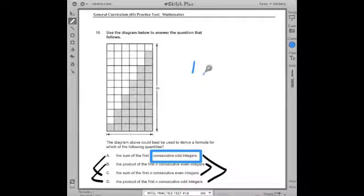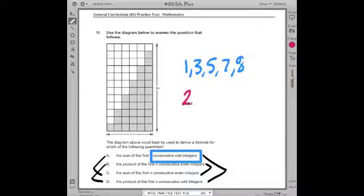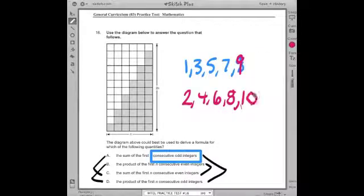They can be positive and negative, but if we're dealing with the first consecutive odd integers, I guess they'll want us to start with numbers like 1, 3, 5, 7, 9. And if we were dealing with the first consecutive even integers, we'd be dealing with 2, 4, 6, 8, and 10. All right, so these are my odd, these are my even.